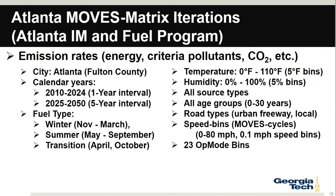Moves Matrix processes iterations that include county, calendar years in one-year intervals from 2010 to 2024 and five-year intervals for out years. In Atlanta we have three fuel types: winter fuel, summer fuel, and a transition fuel. Exhaust runs are done in five-degree Fahrenheit bins, with one-degree bins available. We do 5% humidity bins, go across all vehicle source types, and roadway types for exhaust emissions are urban freeway and local. We cover all speed bins and all operating mode bins.